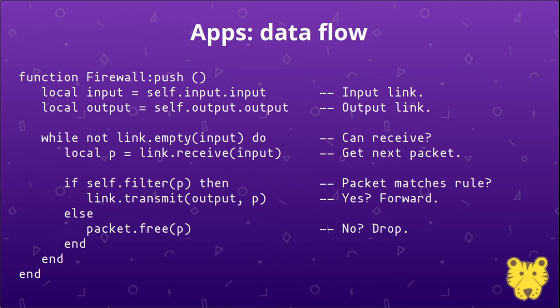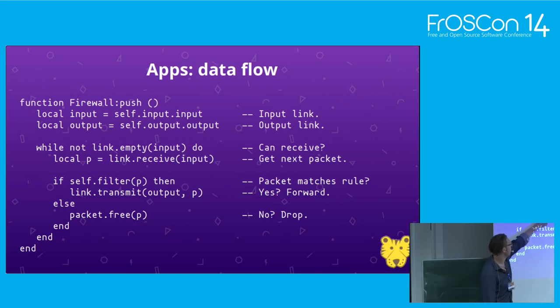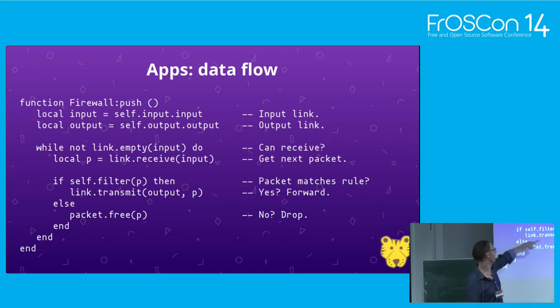During a breath, the engine calls the app's push callback to process packets. The example firewall app has an input and an output link — these are created and connected automatically as declared in the configuration. It reads the next packet from the input link while the input link is not empty, tries to apply the filter, and if it matches, transmits the packet onto the output link. If it doesn't match, we drop the packet by freeing it. That's all there is to it.